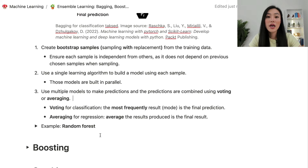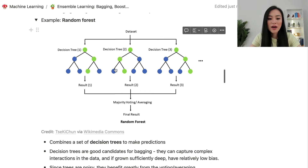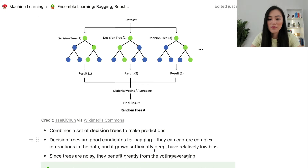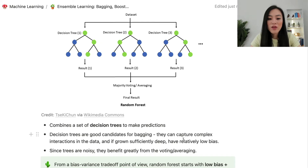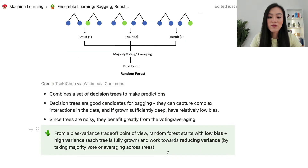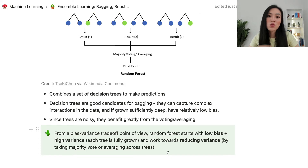An example algorithm leveraging bagging is random forest. Random forest combines a set of decision trees to make predictions. Decision trees are good candidates for bagging because they can capture complicated interactions in the data, and if grown sufficiently deep, have relatively low bias. From a bias-variance tradeoff perspective, random forest starts with low bias and high variance because each tree is fully grown and tends to overfit. It then works towards reducing variance by taking majority vote or averaging across trees.